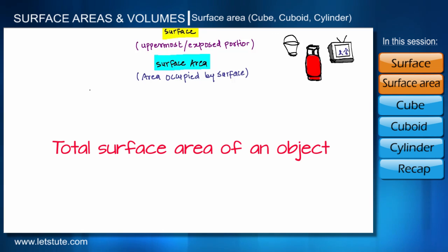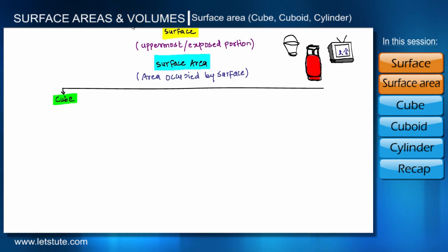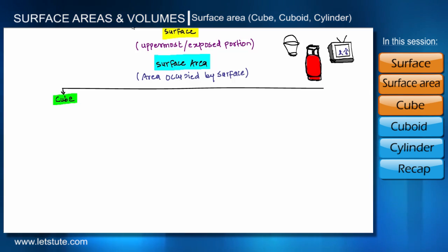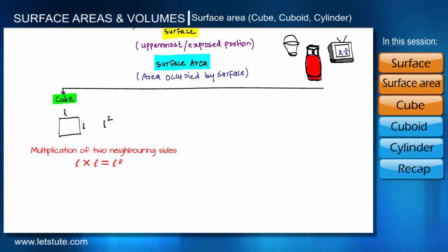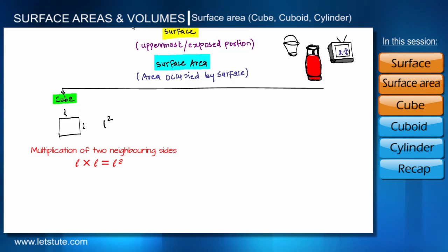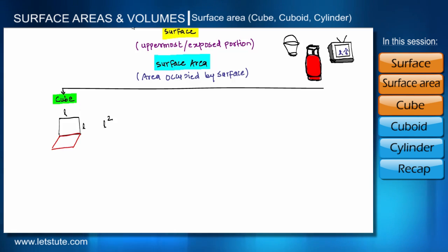In this session we will discuss how to find the total surface area of some important objects. Let us start with the cube. As we all know, the area of a square with side L is L². Now suppose we want to make a box using such square sheets, each having area L². This is our base which has four sides, and we are going to create walls on these four sides.